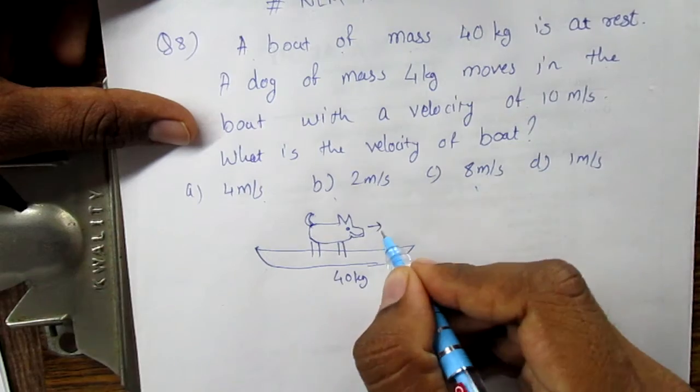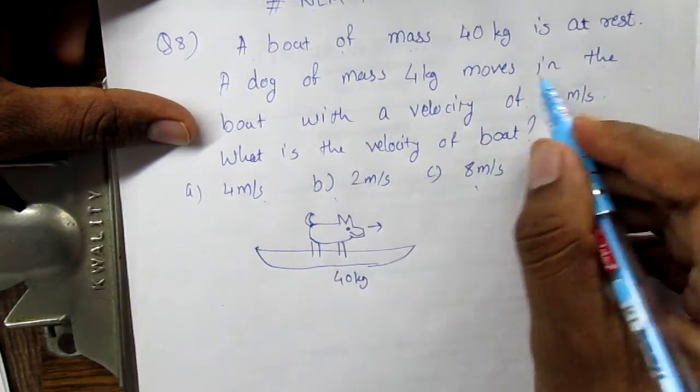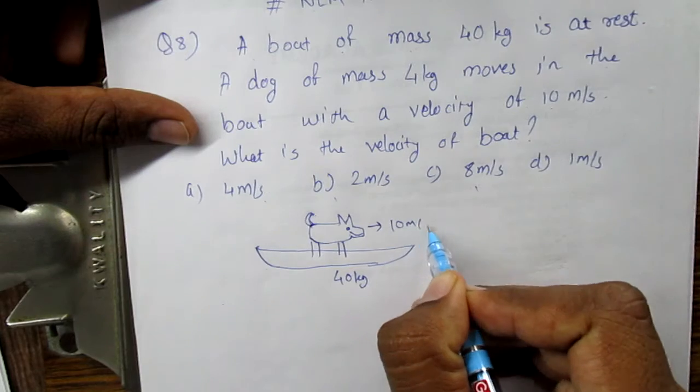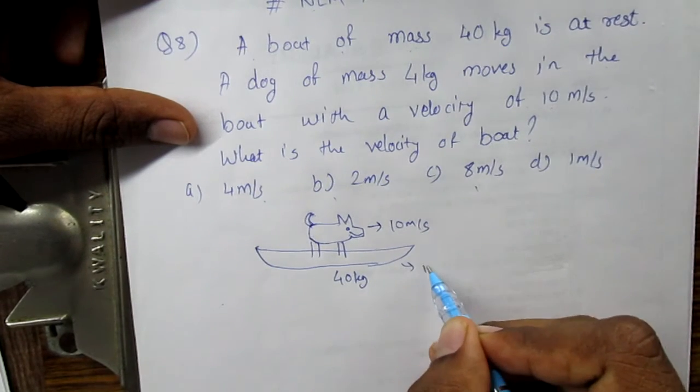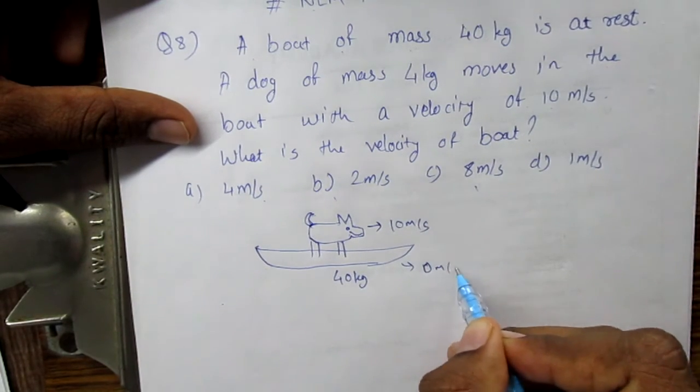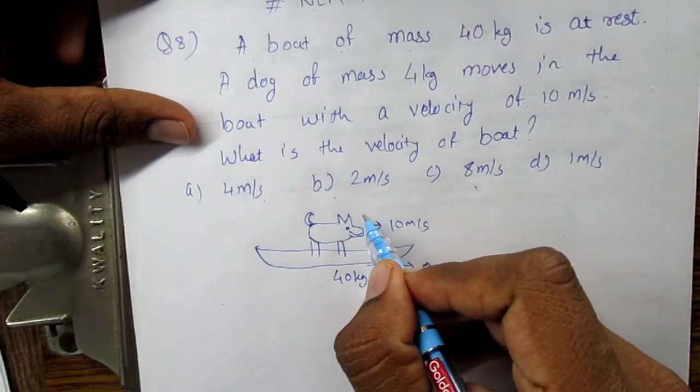And this dog is moving with 10 meters per second. This boat is at rest, and this dog is of mass 4 kg. This is the question.